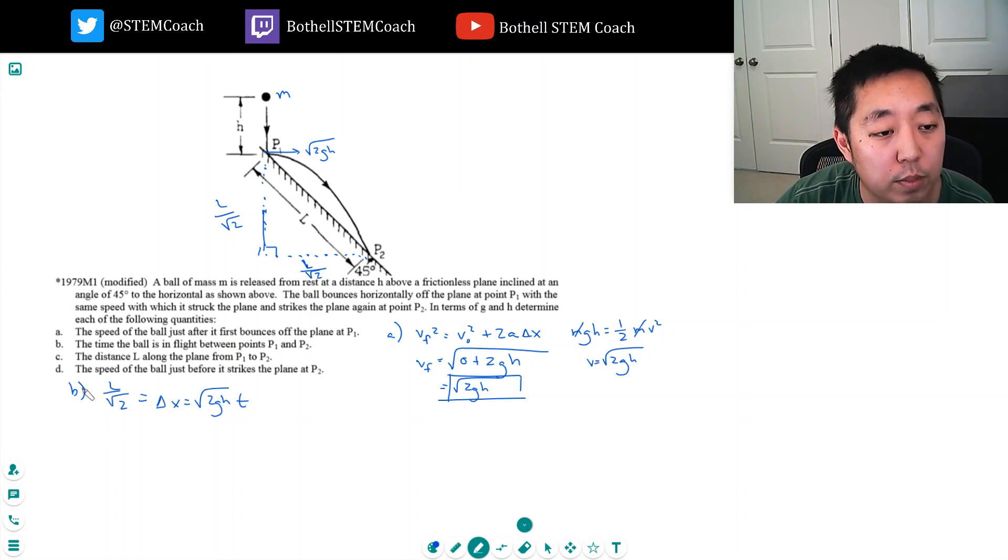I don't think, or at least, so the other thing I want to look at is the vertical. Okay, delta y equals v_naught t plus one-half a t squared. Now the vertical velocity initially is zero because it's all horizontal here, so this part is zero.